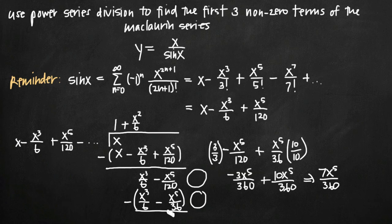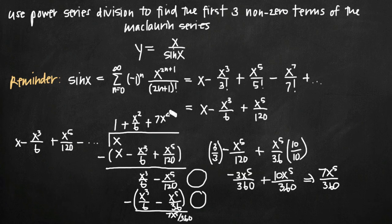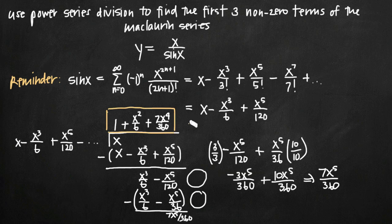So the result down here is 7x to the fifth over 360. Now we need to figure out what we need to multiply by x in order to get 7x to the fifth over 360 — obviously we need to multiply by 7x to the fourth over 360, so we put that up top. We could multiply through, but as you can see, we now have three non-zero terms. So this is our final answer — that's how you use power series division to find the first three non-zero terms of the Maclaurin series x over sine of x.